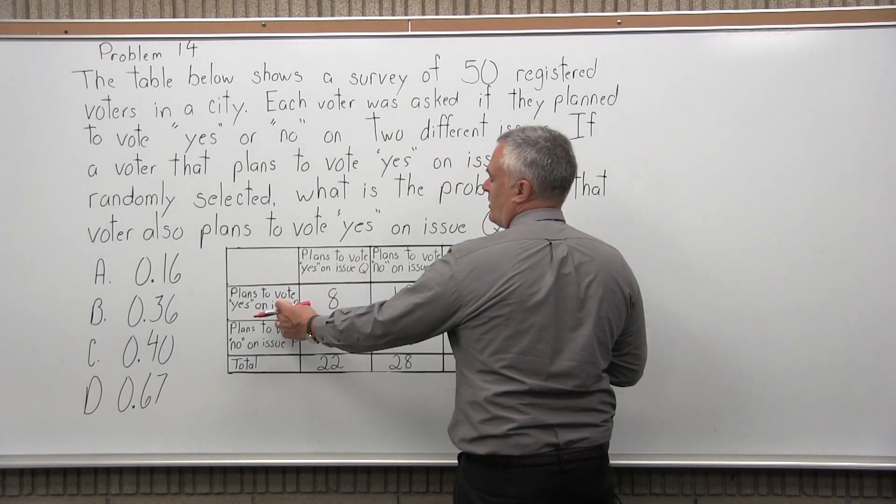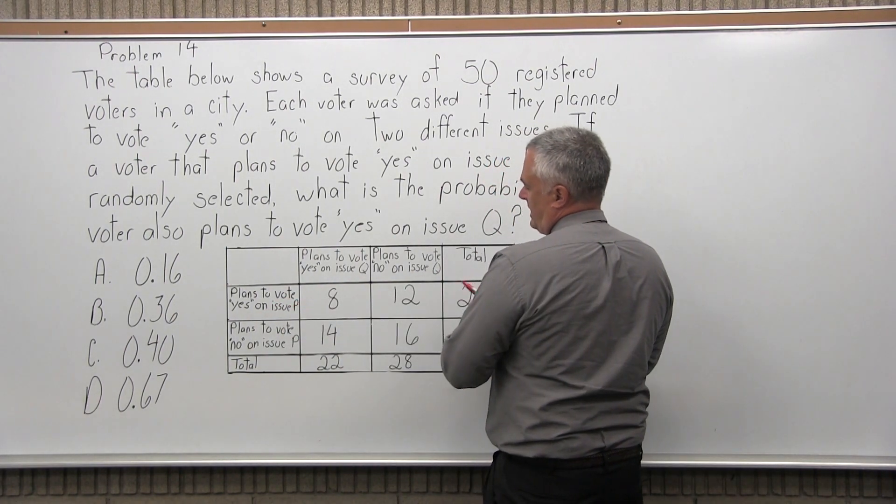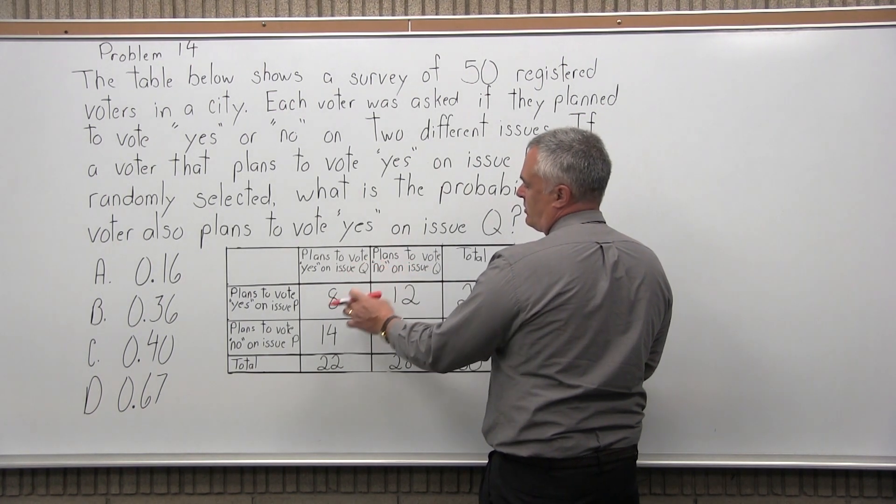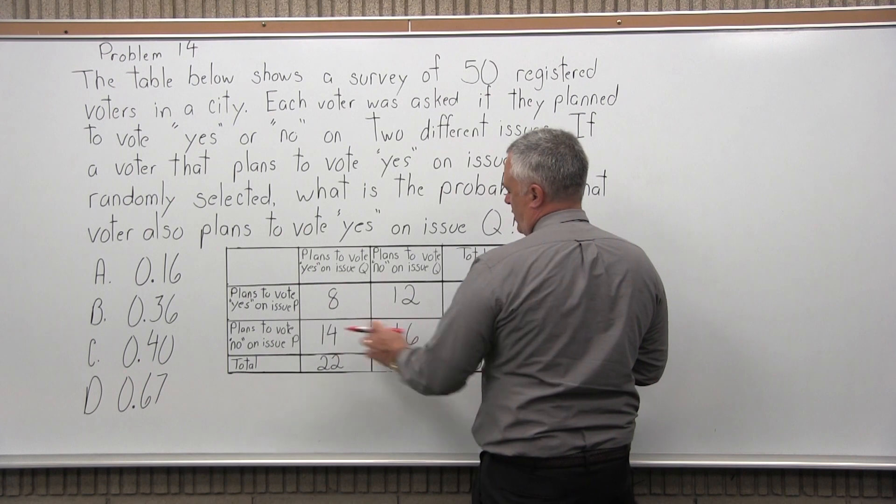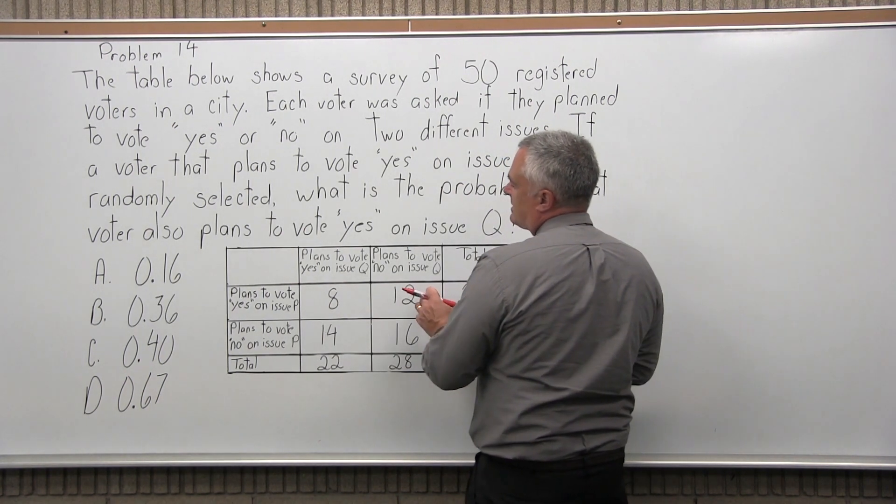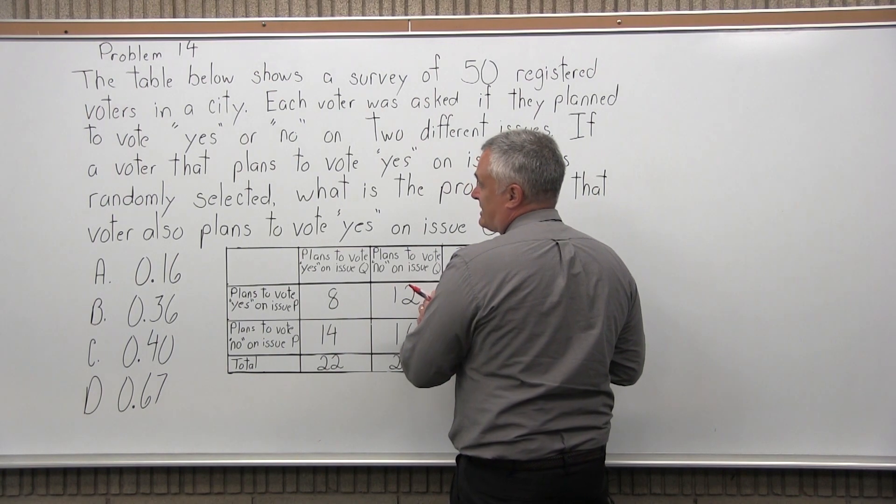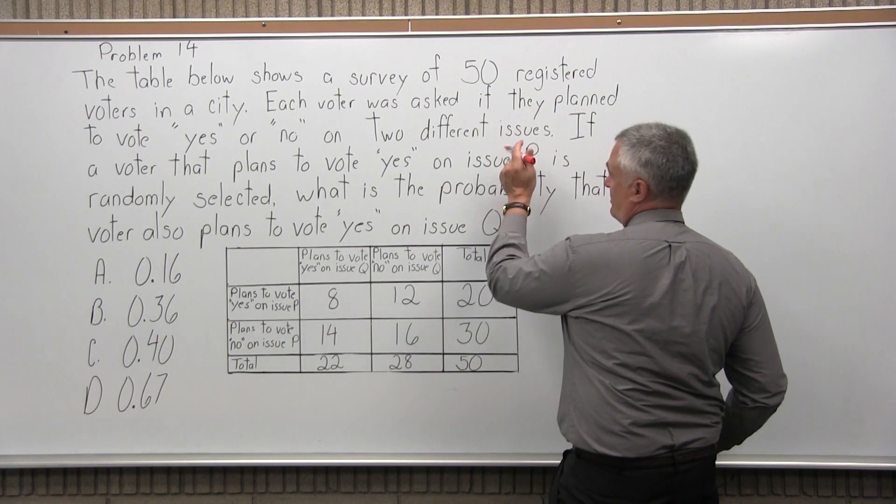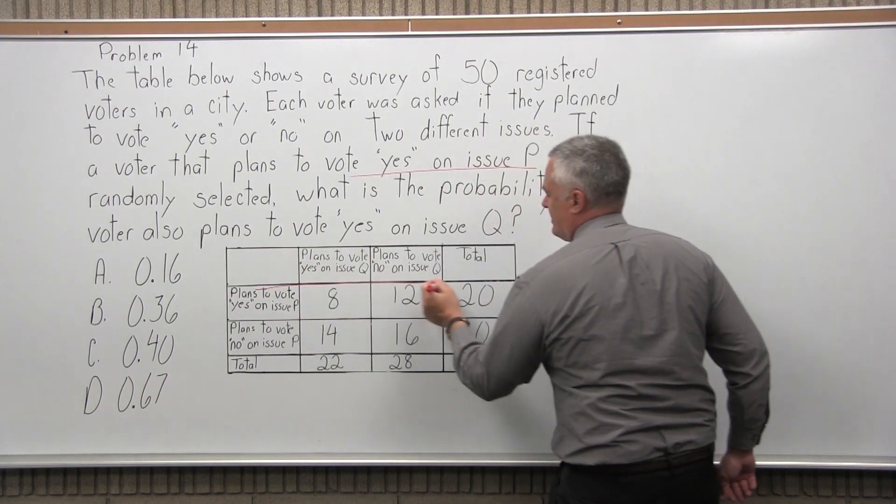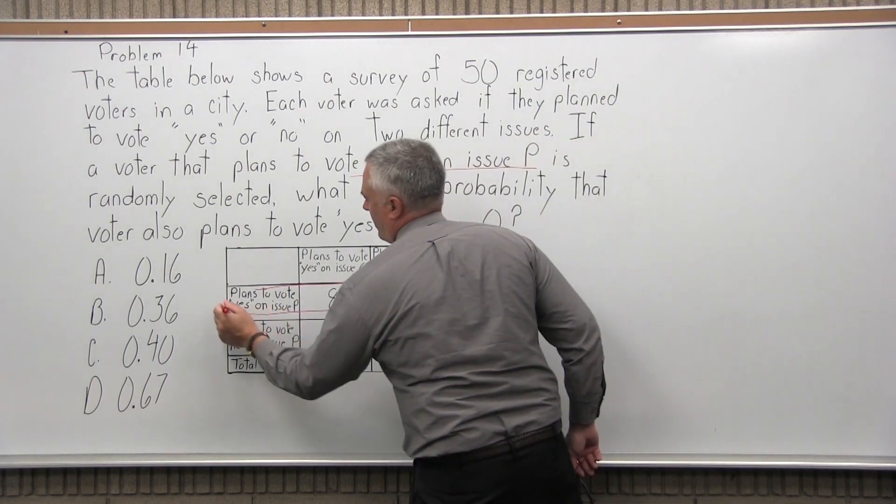there's 20 of them who vote yes on P. And they break it down. The 8 and the 12 gives you this 20 and that's how they vote on Q. And the people who are going to vote no on P is 30. So that's your total of 50. So we're interested in the people that are going to vote yes on issue P because that's what the question talks about. Yes on issue P. So that is this row of our chart.